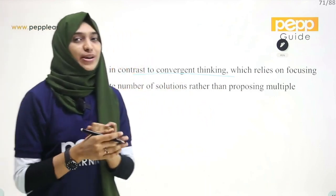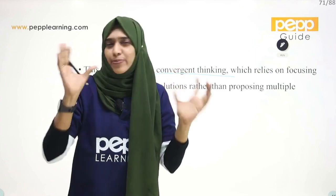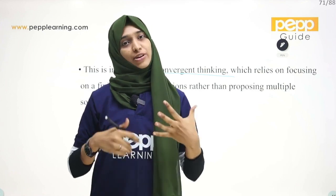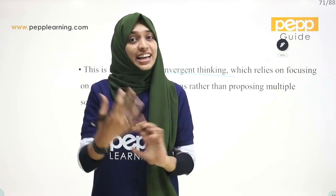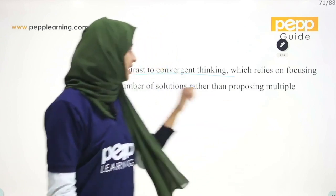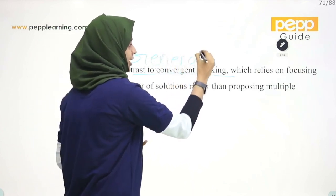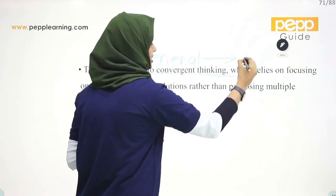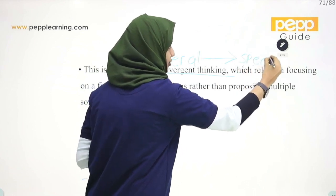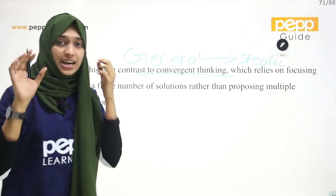Convergent Thinking goes from the general to the specific. There are a lot of problems — for example, there is an anxiety issue, there is a social phobia, there are a lot of problems. Then we have to get a solution in that situation — from the general, we have to get a specific solution. That is Convergent Thinking.